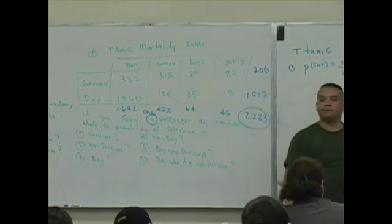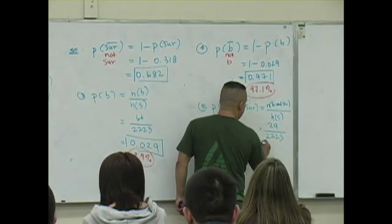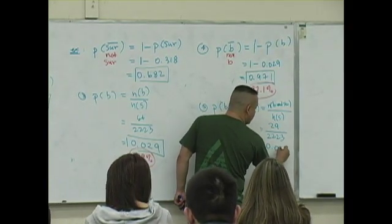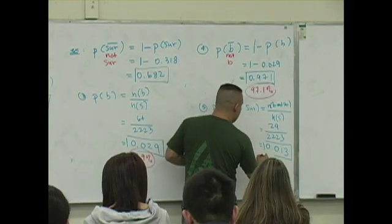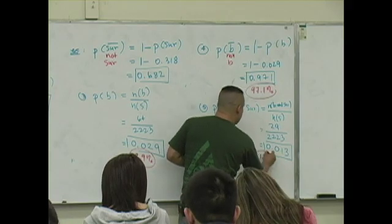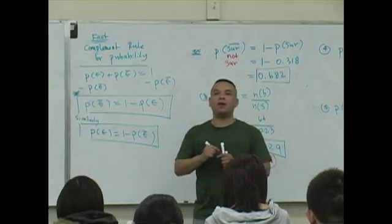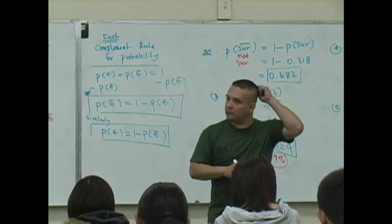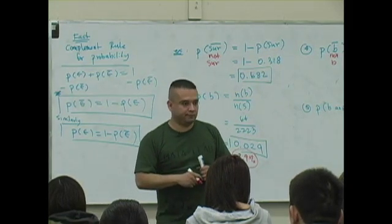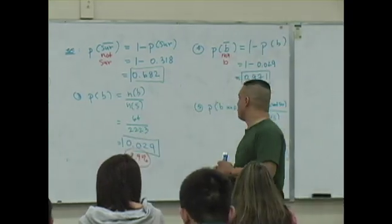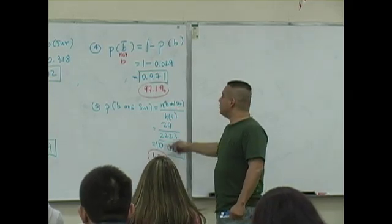29. So what is 29 divided by 2,223? 0.013. So 1.3% of the passengers were both boys and survivors or boys who survived. Okay? You could do this because it's the definition. You could do this.